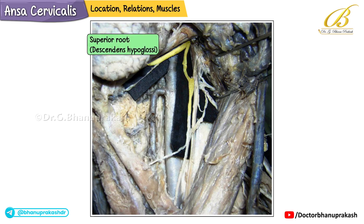The superior root, also called the Descendens hypoglossae, is formed by the descending branch of the hypoglossal nerve carrying C1 spinal nerve fibers.